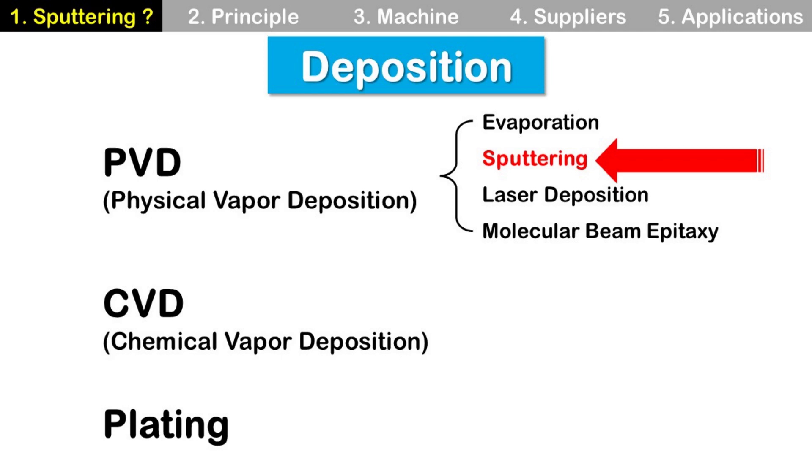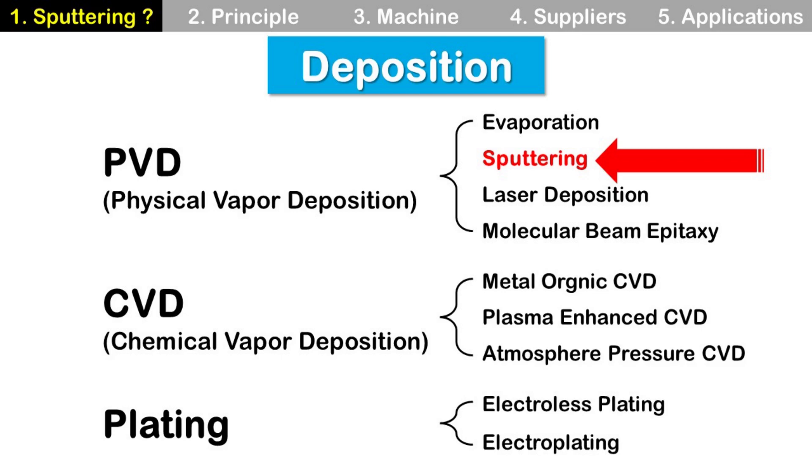There are other technologies as well, like evaporation, laser deposition, and molecular beam epitaxy. In CVD, there are metal organic CVD, plasma enhanced CVD, and atmospheric pressure CVD. In plating, there are electrolysis plating and electroplating. But this is just part of deposition technologies rather than the whole list.